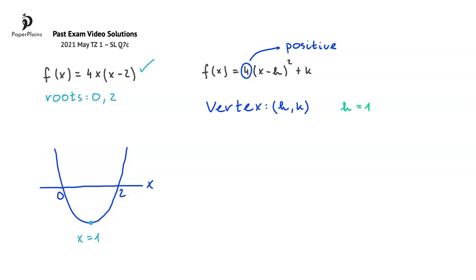Since k is the y-coordinate of the vertex, to get its value we'll substitute 1 into the expression for fx. In other words, we'll find f(1).